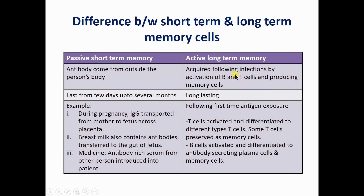Active long-term memory is the natural memory produced by our immune cells. It is acquired following infections by activation of B cells and T cells, which produce memory B cells and memory T cells. These are long-lasting because once memory B cells or T cells are produced, they remain for a long time in the immune system — mainly in the lymphatic system and secondary lymphoid organs of the body.